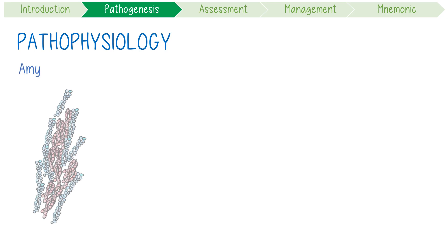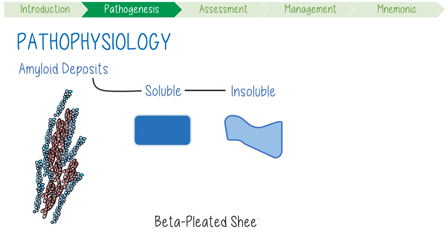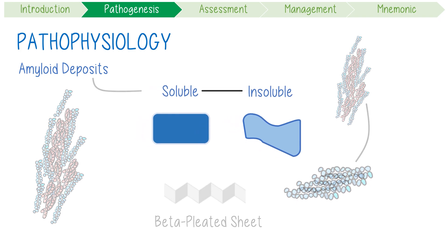Pathophysiologically, amyloid deposits occur after normally soluble peptides become insoluble. This happens when they accidentally misfold into a beta-pleated sheet, allowing them to stack and eventually conform into a twisted fibrillar configuration.